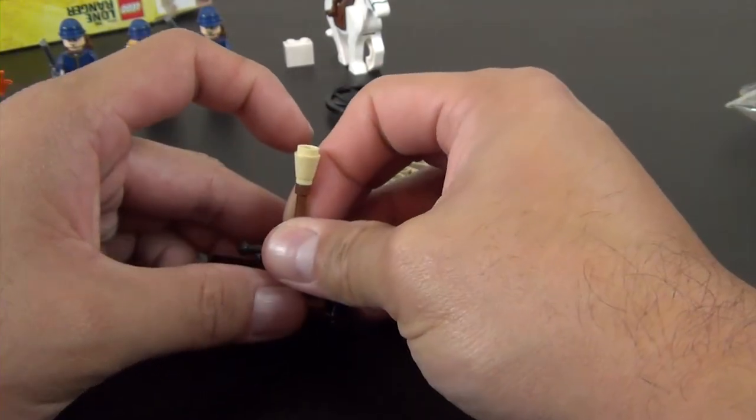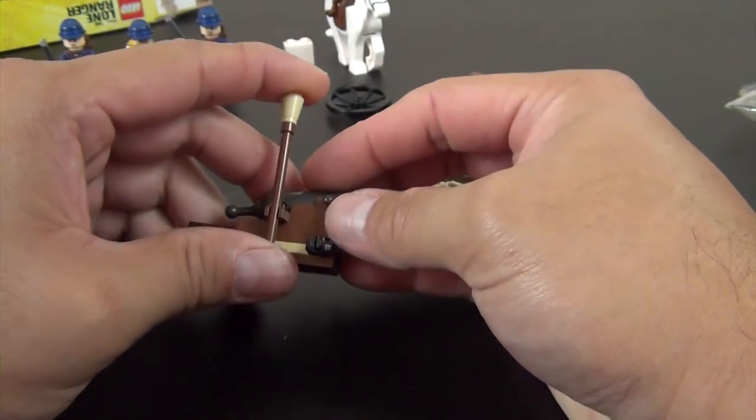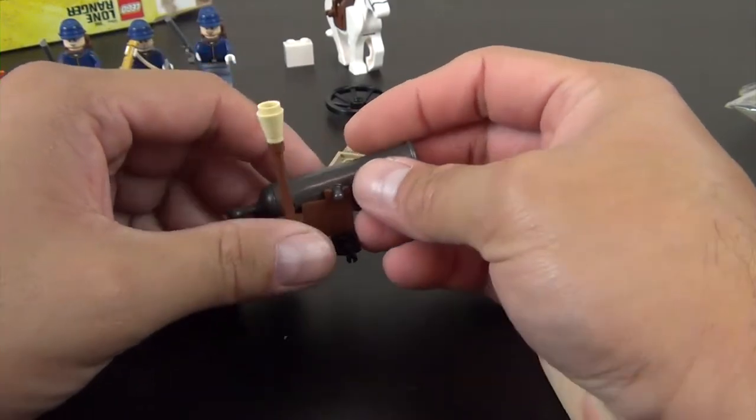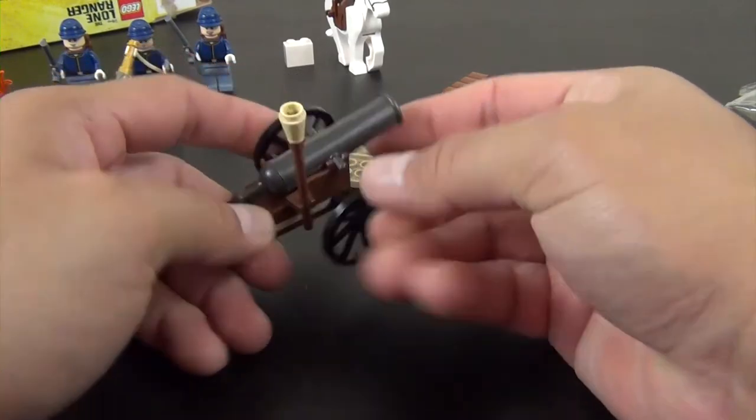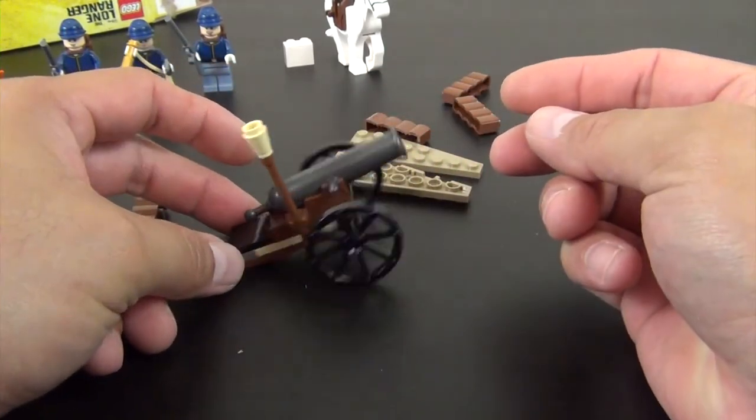This piece will go here, it's a little mallet type thing to help push in the cannon balls. It's got some wheels, there's the cannon.